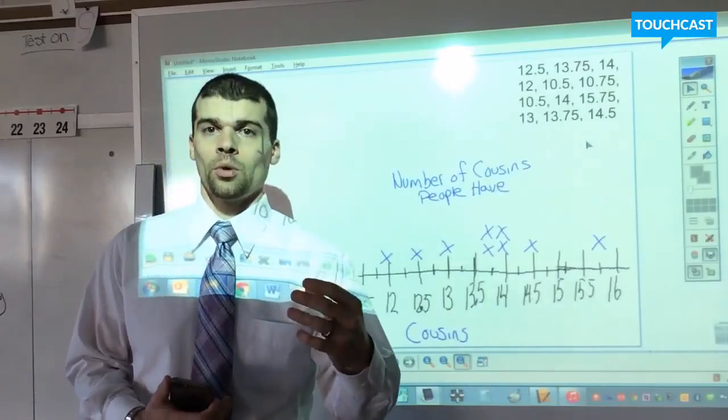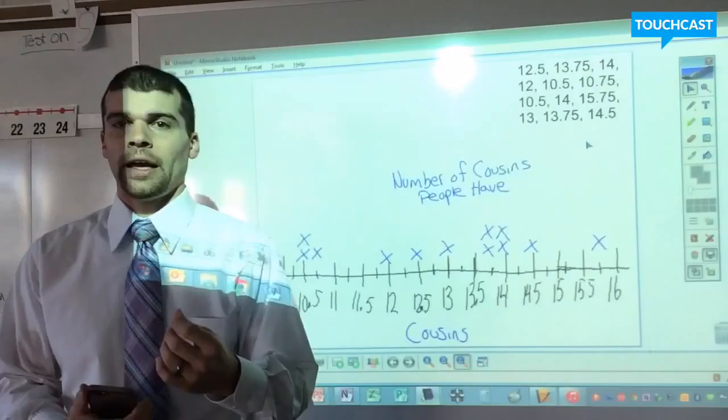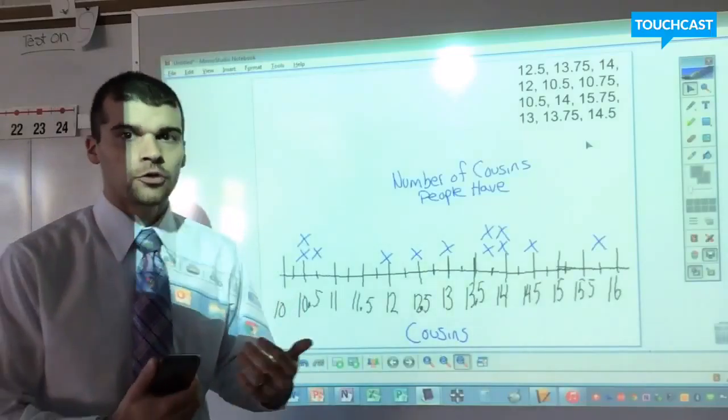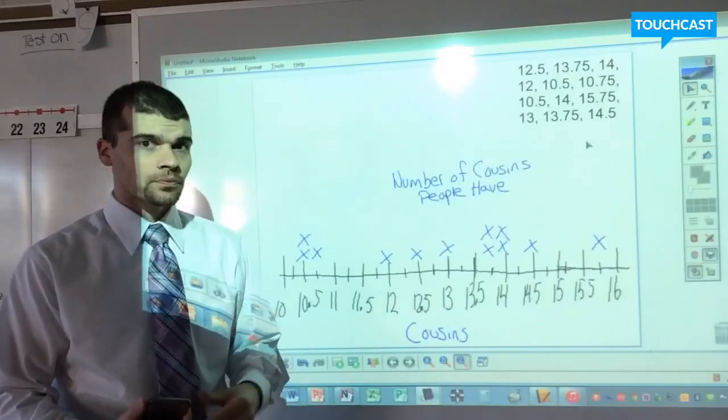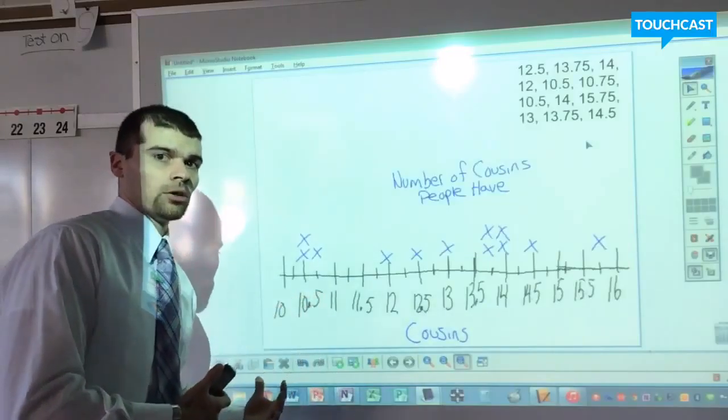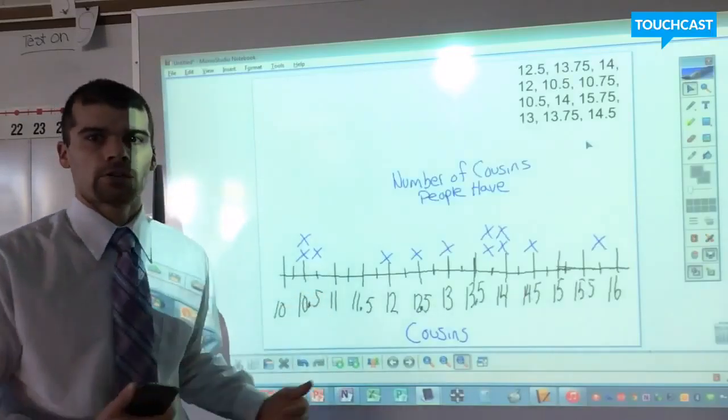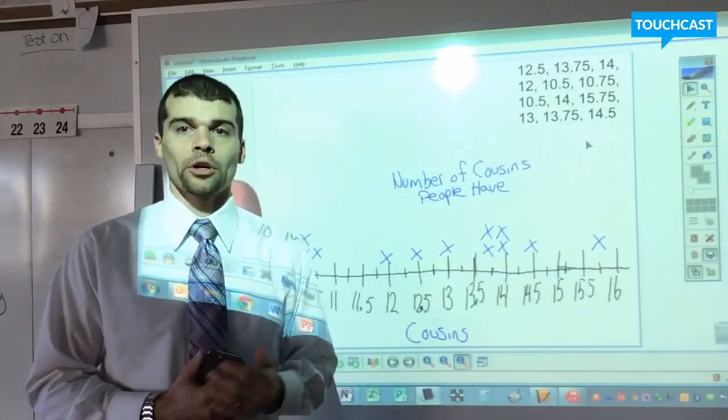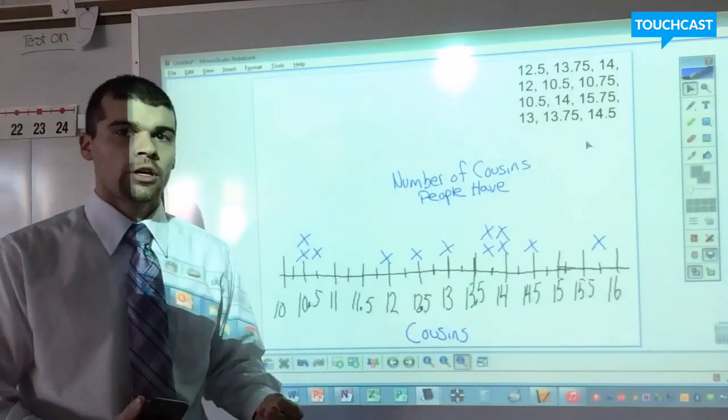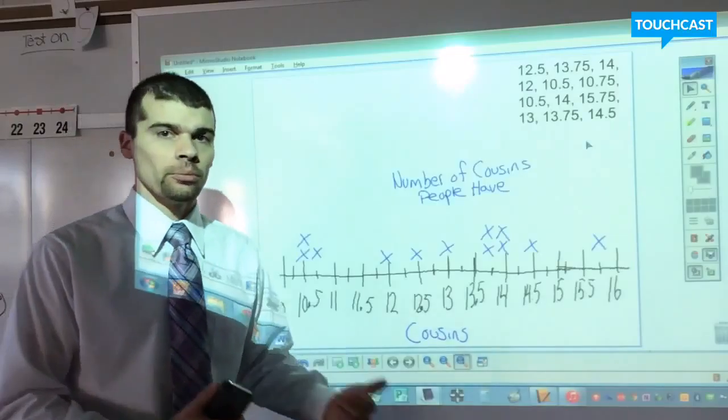We're going to be talking about words like most and least and at least and fewest and all these different terms. We're going to be analyzing the smallest number of cousins in this case or the largest number of cousins in this case, or we're going to be looking at which amount of cousins occurred the most.